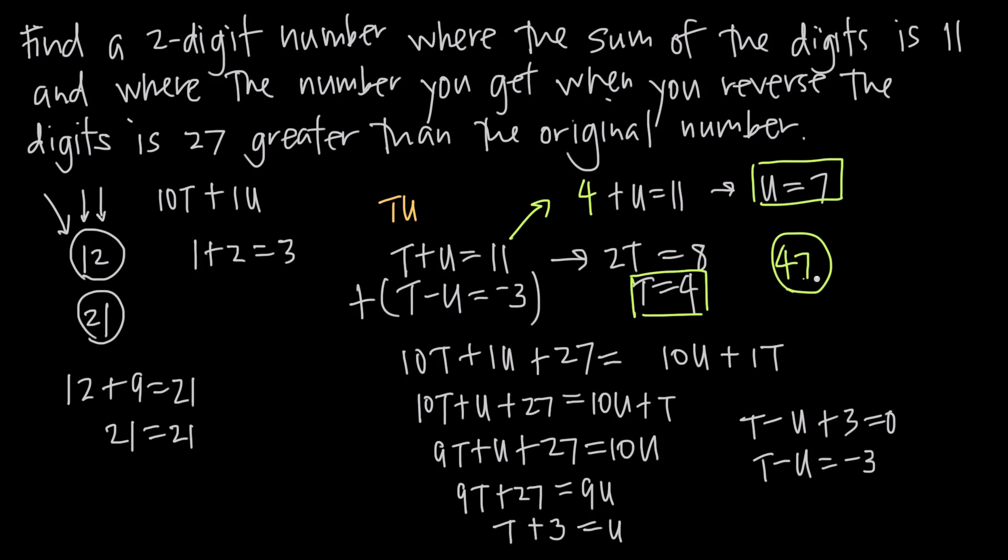So it says find a two-digit number, this is a two-digit number, where the sum of the digits is 11. Well, 4 plus 7 is 11, so we're good there.